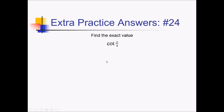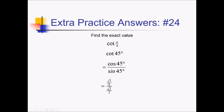On this problem, I'm trying to get cotangent of pi over 4, which is cotangent of 45 degrees. Rewriting as cosine of 45 over sine of 45: the interesting thing is that cosine and sine of 45 are both radical 2 over 2, so I'm basically doing something over itself, which we know is going to be 1.